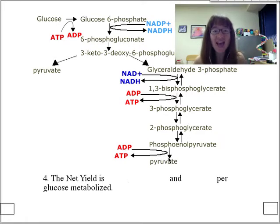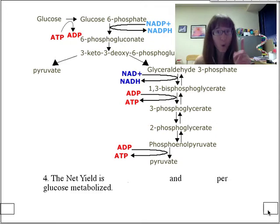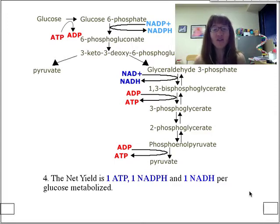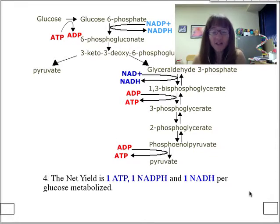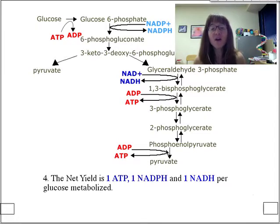Let's summarize the net yield of the Entner-Doudoroff pathway, which is different from glycolysis. We see production of NADPH — which is unique — plus one NADH and one ATP. Comparing to glycolysis: it's more NADPH since glycolysis made none, but it's less ATP and less NADH — in fact, half the amount. So the equivalent yield is one of each, but with more NADPH and less ATP and NADH.